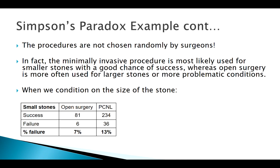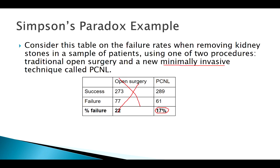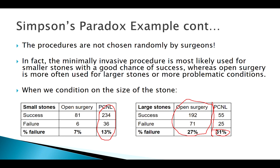When we condition on the size of the stone, for small kidney stones there are many more PCNL surgeries — yet PCNL shows a higher percentage of failure. For large stones, the majority received open surgery, and PCNL still has a higher failure rate. So this is the paradox: with the raw overall data, PCNL's failure percentage was lower, but when we condition on kidney stone size, PCNL actually has a higher failure rate in both cases.